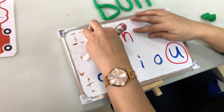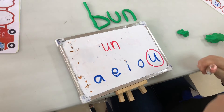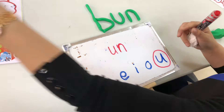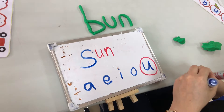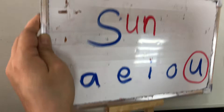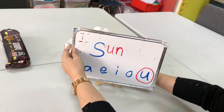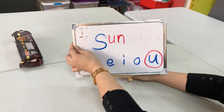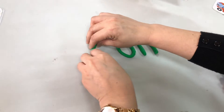What other word can you think of? We've done 'bun' — think of another word. Maybe we can use 'sun.' Try to write the word 'sun.' You can either draw a sun and write it, or you could also do the play-doh again and make the word.